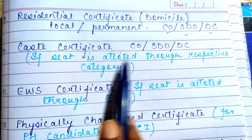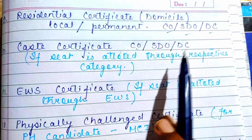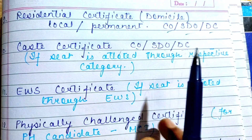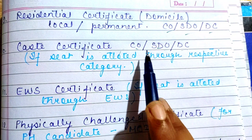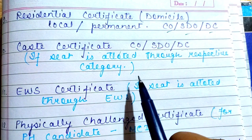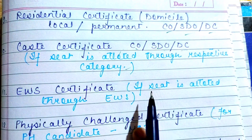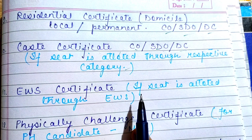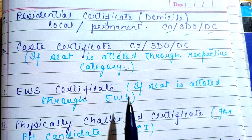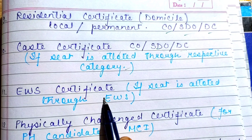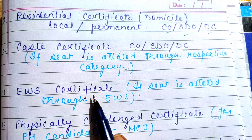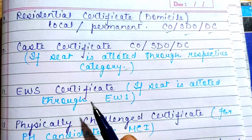Next is the Caste Certificate, which should be at the CO level, SDO level, or DC level. For All India Counseling, SDO or DC level is required. For State Counseling, any level will work. The caste certificate is only needed if you have been allotted a seat under that respective reserved category. If a General or Unreserved seat is allotted, the caste certificate is not required. The EWS certificate follows the same rule — only needed if allotted in the EWS category.